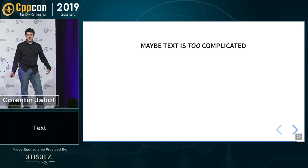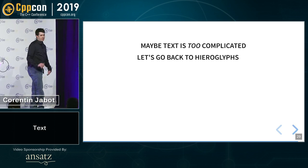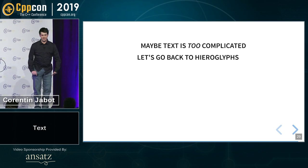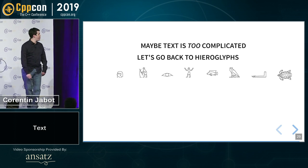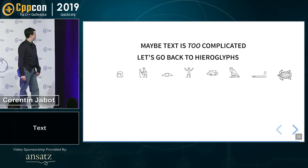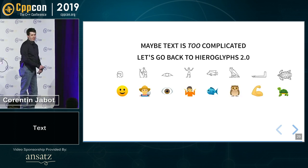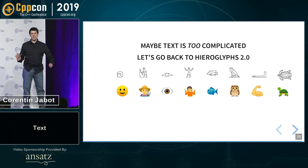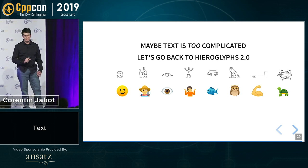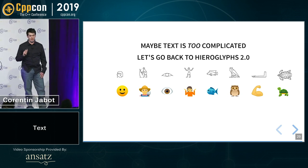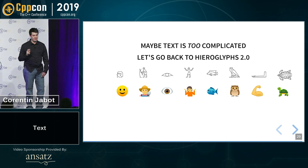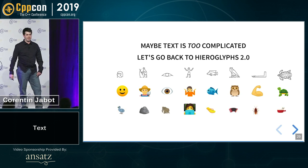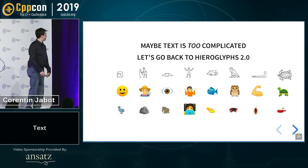So maybe text is too complicated. We should just go back to emoji, right? It's way more simple. Maybe we can have emoji in every programming language. And because I know that this is the only thing that you actually care about, I'm pleased to announce that there will be new emoji in Unicode 13.